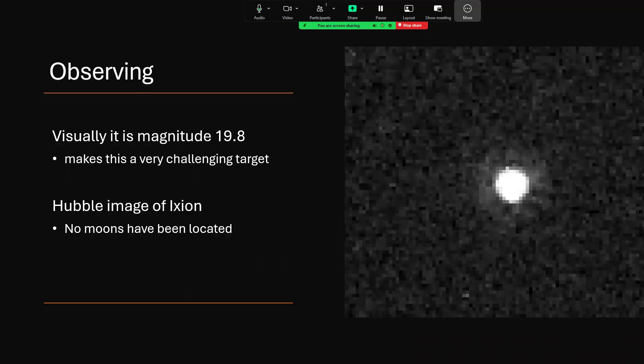Now it's very faint, nearly magnitude 20, 19.8, a very challenging target indeed. And this is the best image that we have of Ixion from the Hubble Space Telescope. There are no moons in this image as far as we can see. I think the bright dot that you can see at the bottom there is a background star. But there's something going on around it. Is that a dust disk? We're not sure.